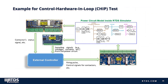Here is an example of what a control hardware-in-the-loop setup might look like. All power circuits are modeled inside the RTDS simulator. Sampling signals — for example, voltages and currents from the power circuit — are sent out via the GTAO card to the external controller. The external controller may also require contact status signals, which are read in via the GTDO card. After the control schemes execute in the external controller, firing pulses and other control signals for contactors or other devices are sent back to the RTDS via the GTDI card.